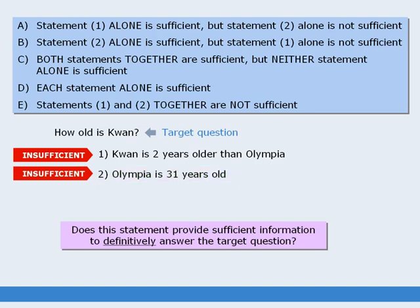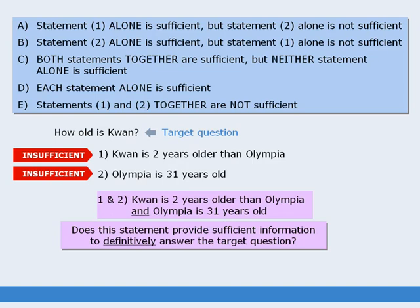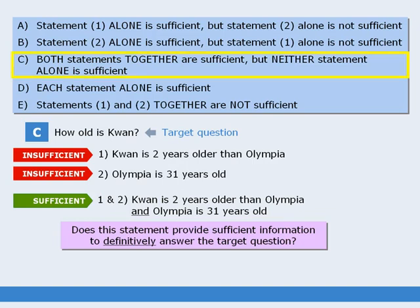When neither statement alone is sufficient, we need to examine both statements combined. If we combine the two statements, we know that Quan is 2 years older than Olympia, and we know that Olympia is 31 years old. Do the two statements combined provide enough information to answer the target question? The answer is yes — using both statements, we can conclude that Quan must be 33 years old. So the correct answer is C, which says that both statements together are sufficient, but neither statement alone is sufficient.